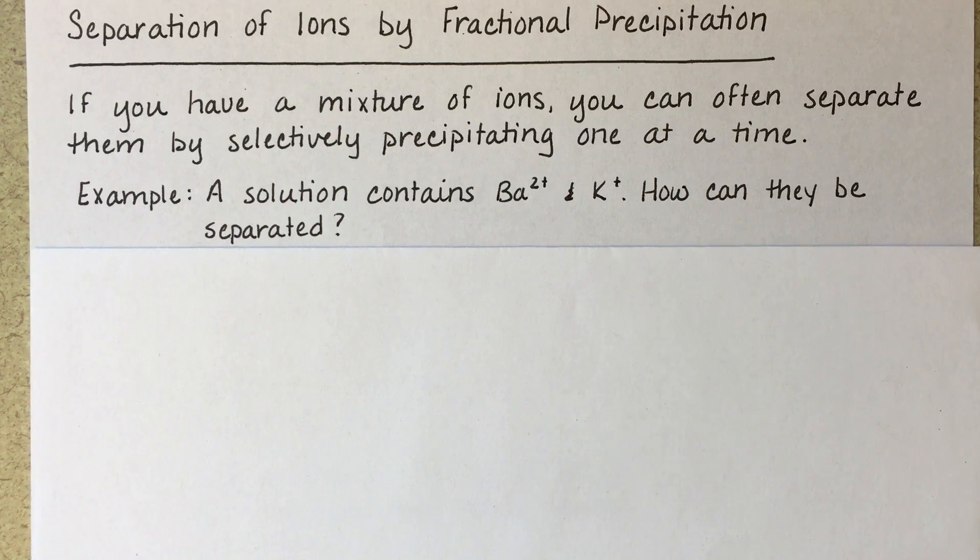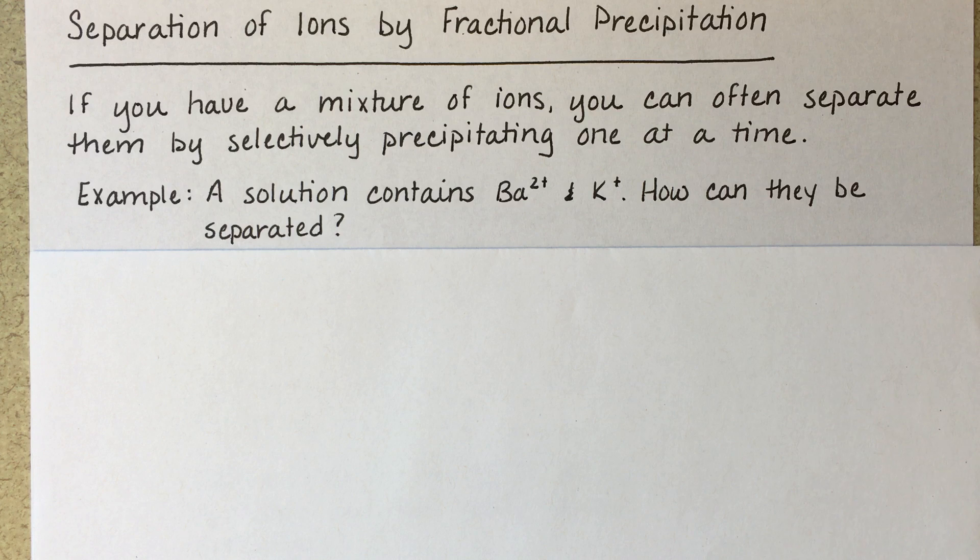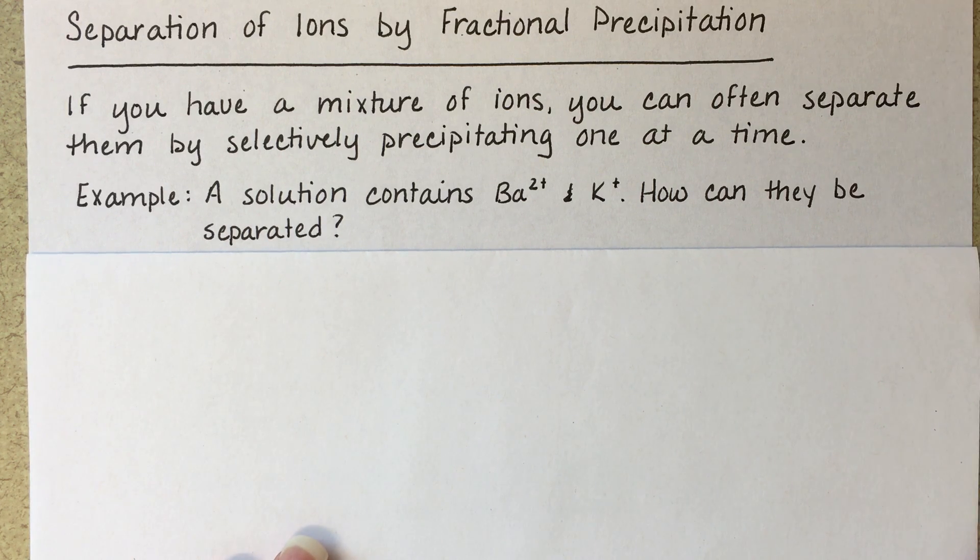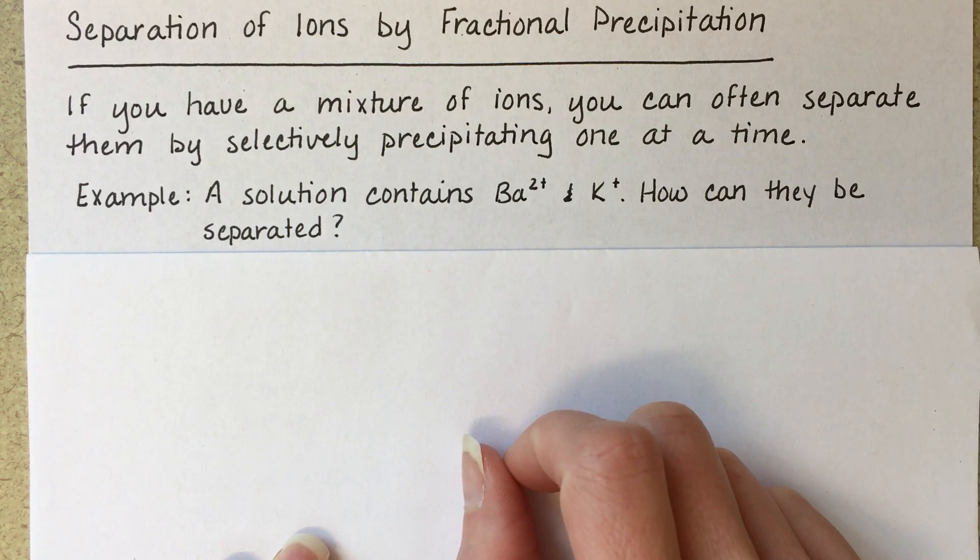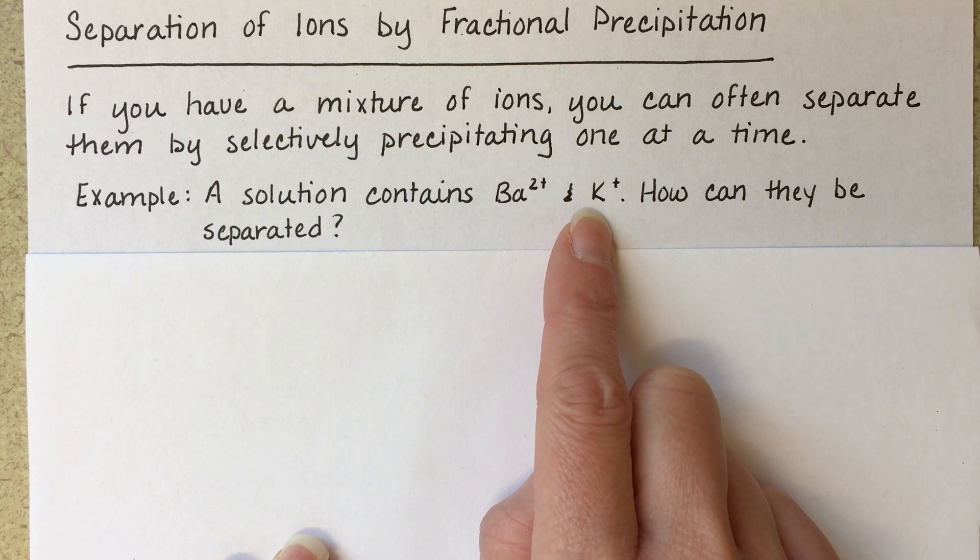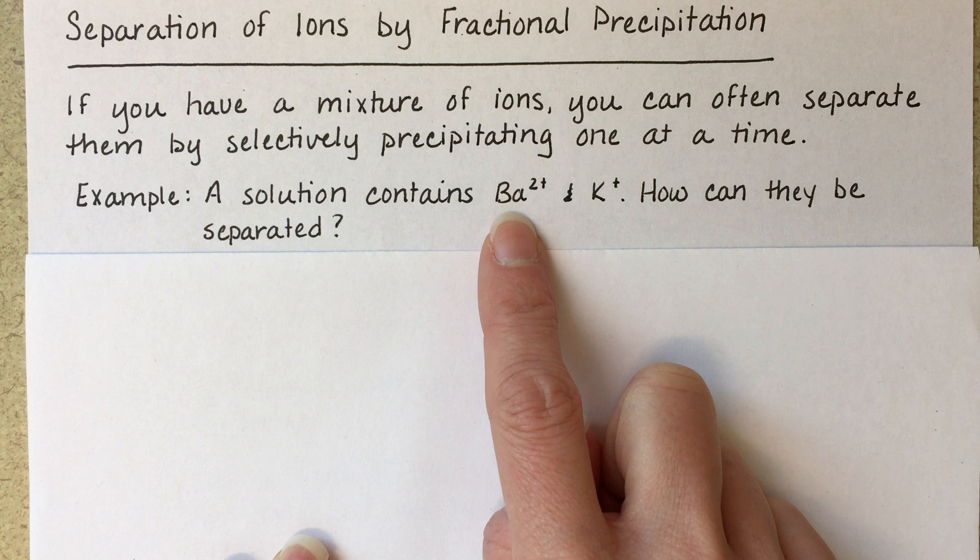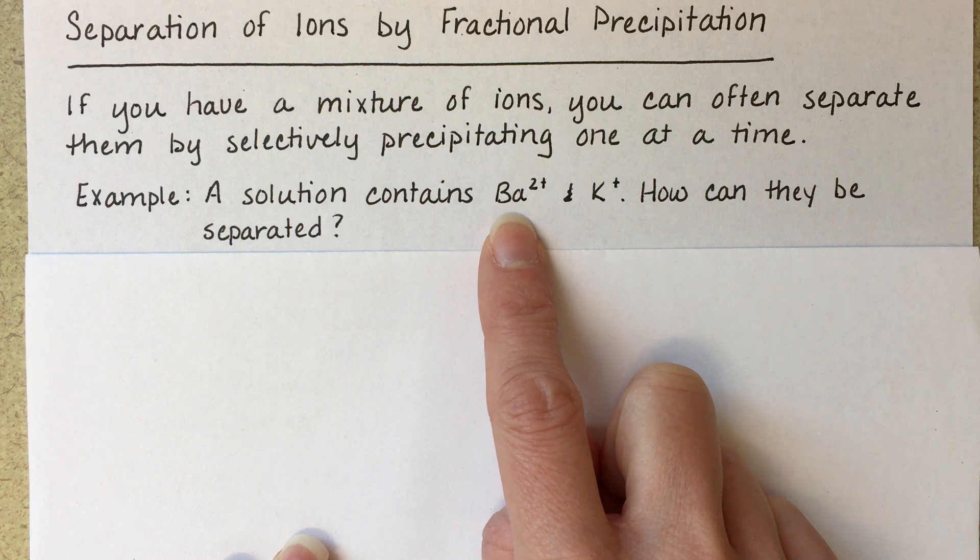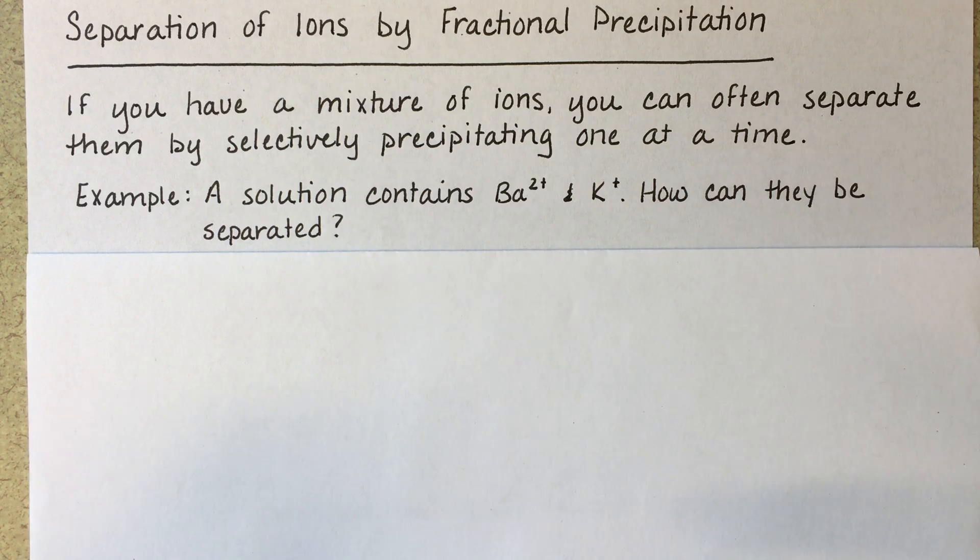The first one, let's say that we have a solution that contains barium ions and potassium ions, and we want to separate them from each other. To do this, we're going to look for an anion, a negatively charged ion, that will precipitate barium but not potassium, or vice versa. So we want to find an anion that will form an insoluble solid with barium or with potassium, but not with both.